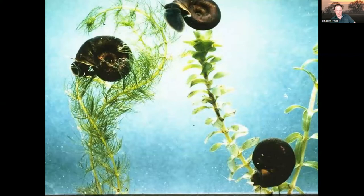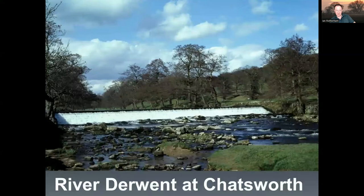Things like Lymnaea, the freshwater ramshorn snail, are good indicators of good water quality, as is the eared snail. Again, we're looking at diversity — if we've got several species that's positive; if we've just got one, is it pollution-sensitive or pollution-tolerant?